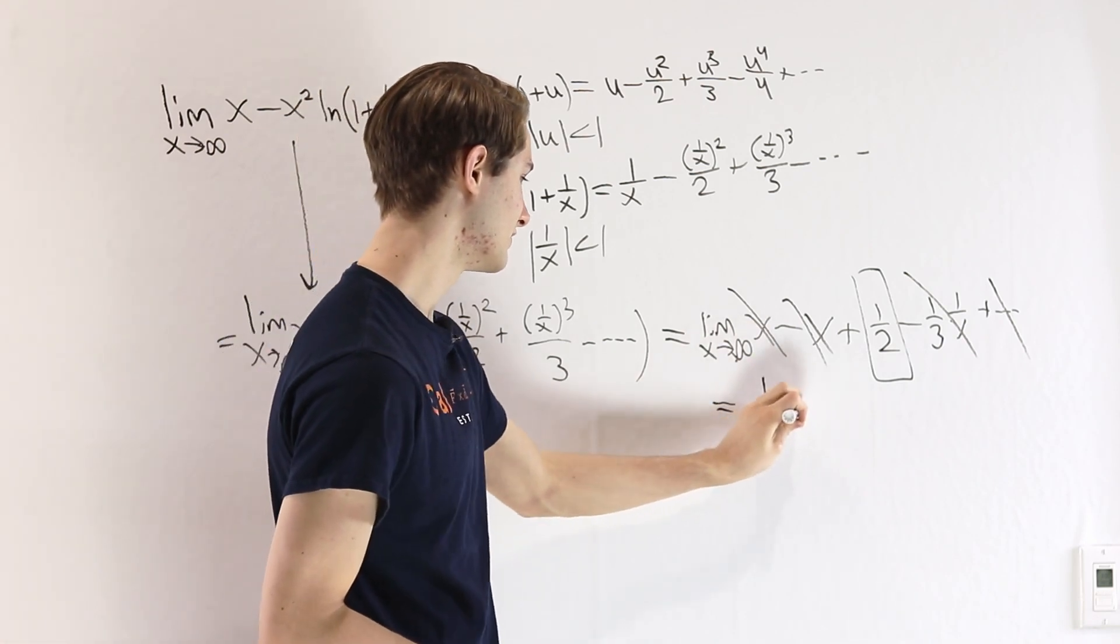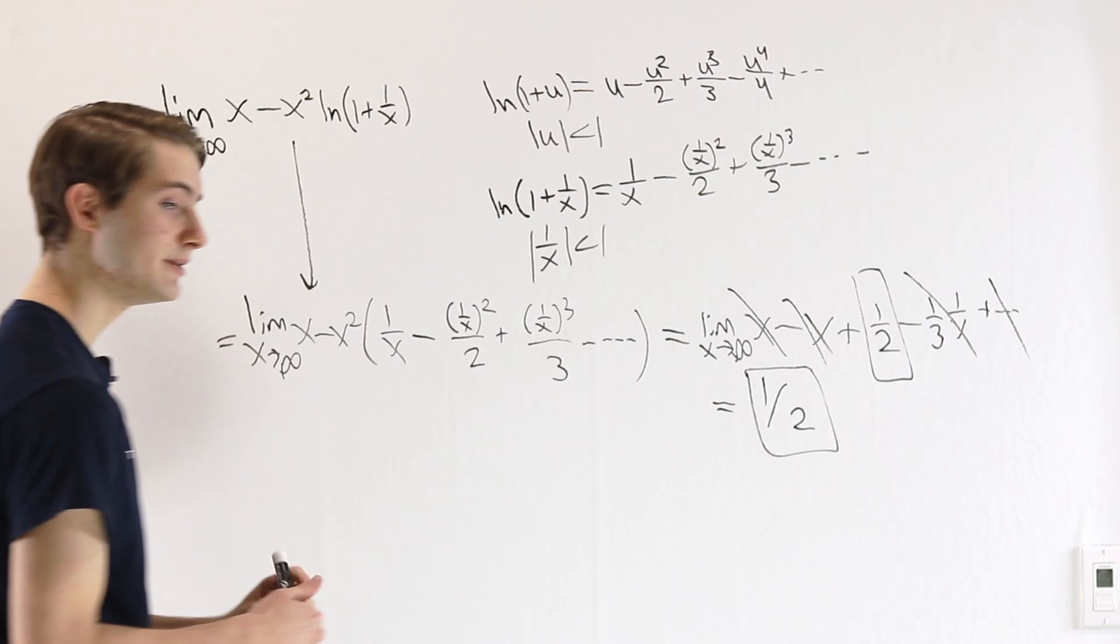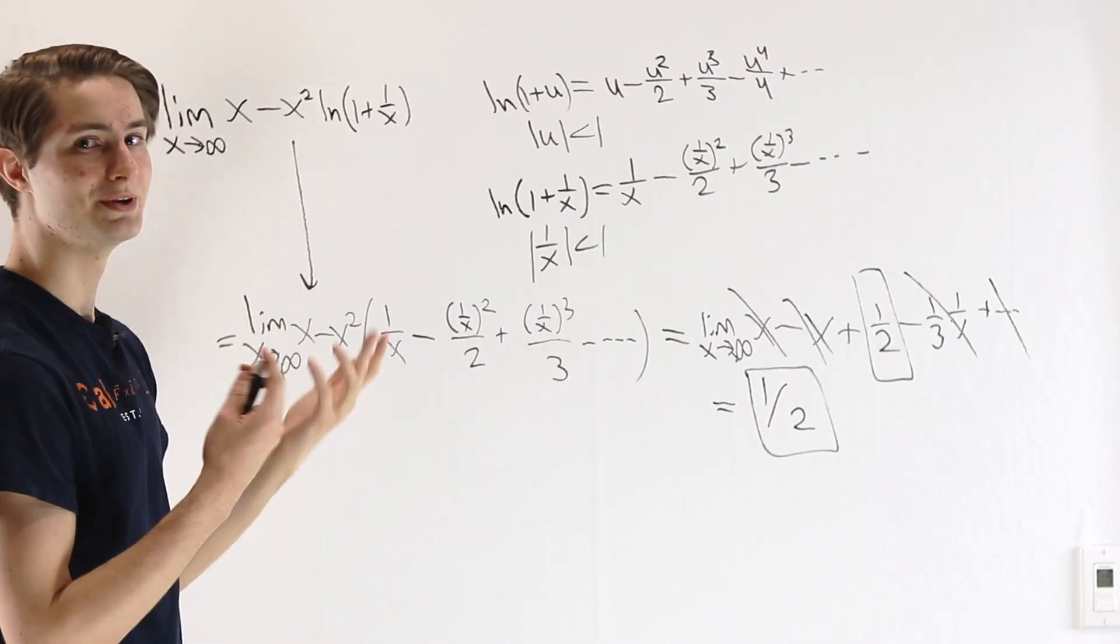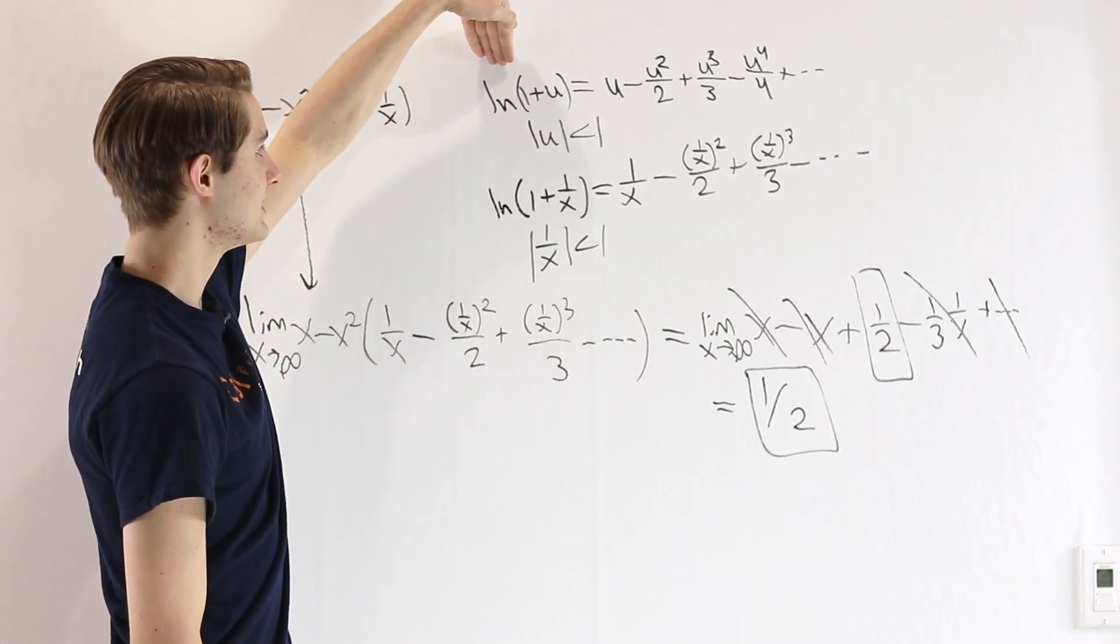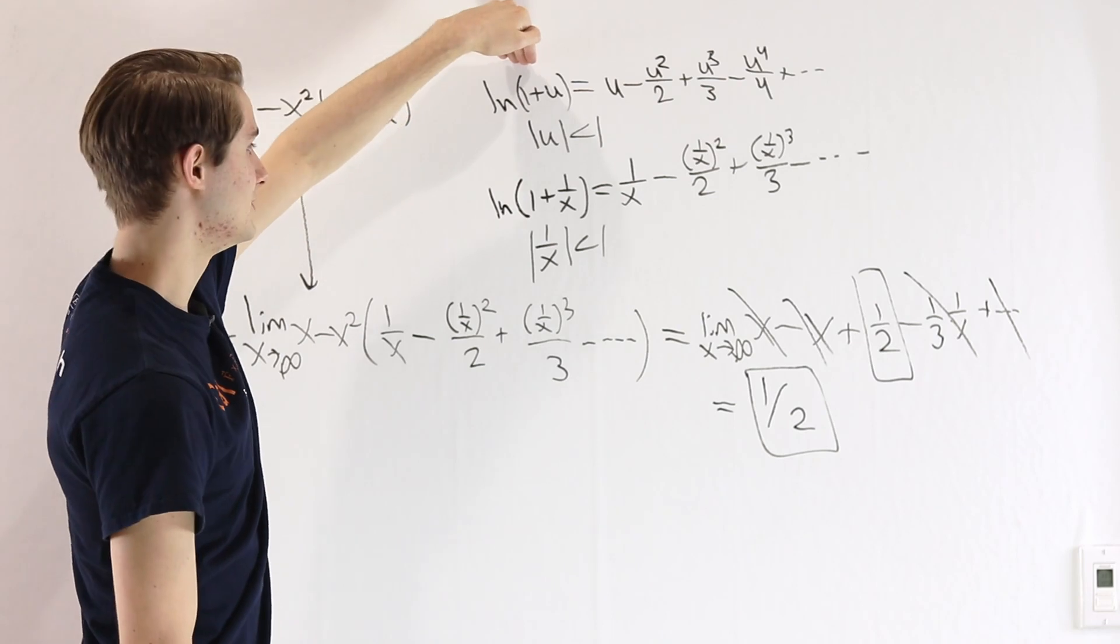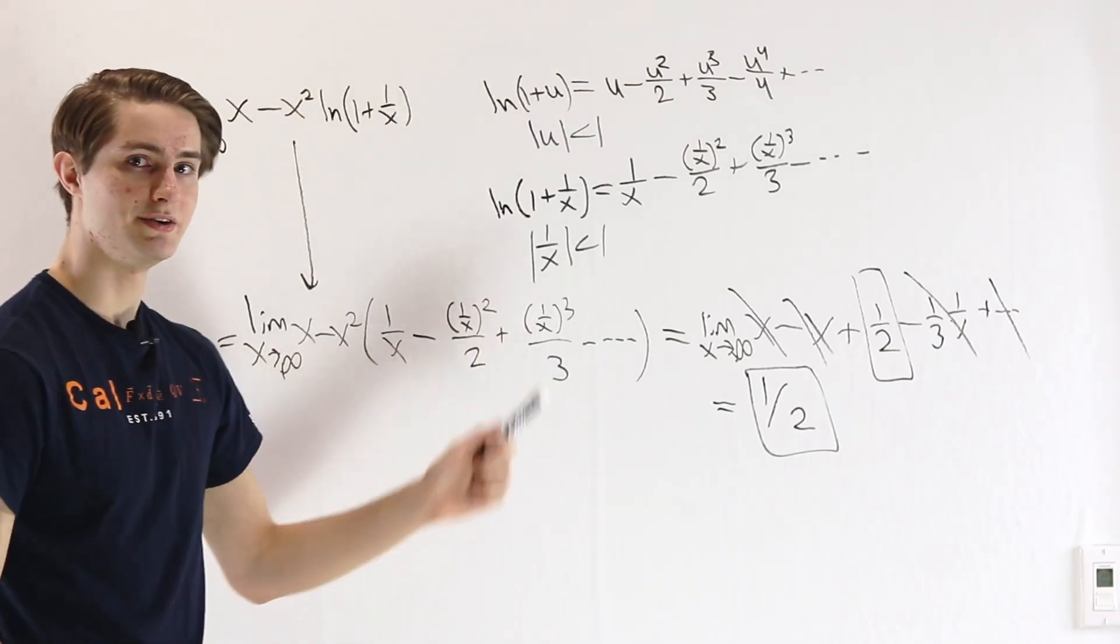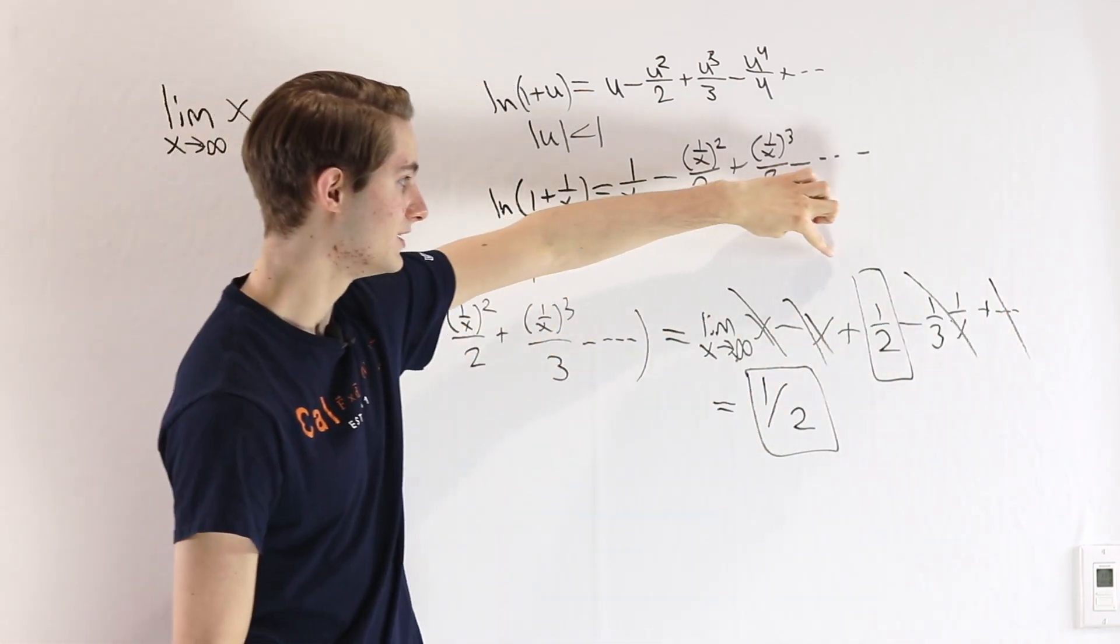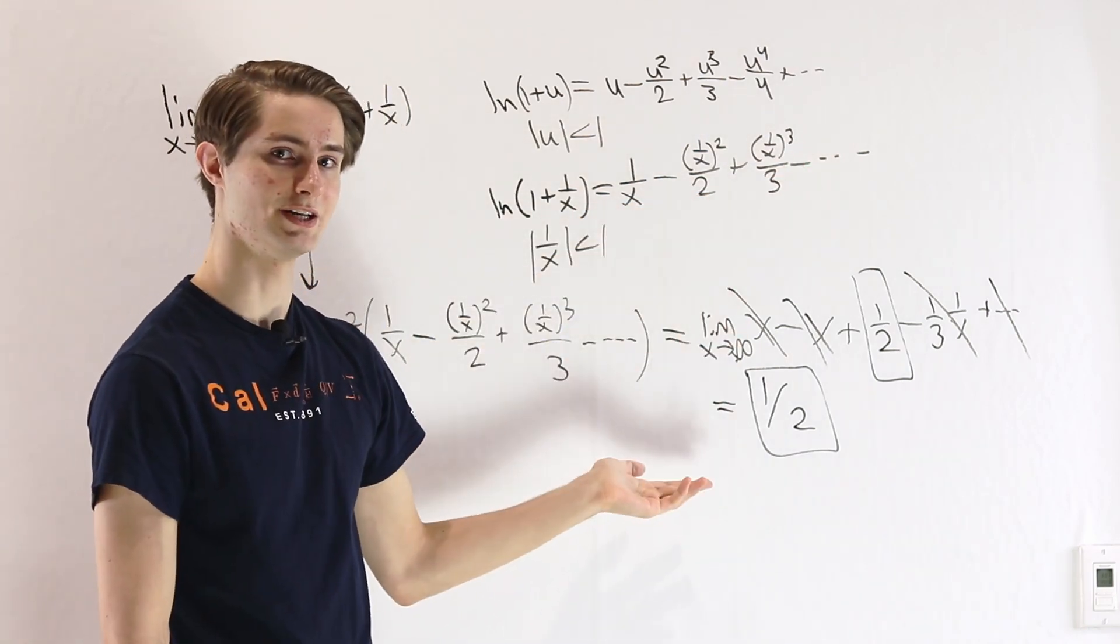So our final answer is just that, 1 half. So the way that we got here was by looking at our limit and realizing that L'Hopital's rule would not be that nice for differentiation. So instead, we can look at the natural log Taylor series, and once we plug in that natural log Taylor series and expand everything out, it turns out that almost everything goes to 0. The only thing that's left is this constant term of 1 half. And so that is our final answer.